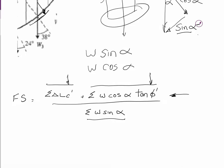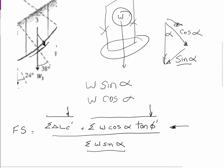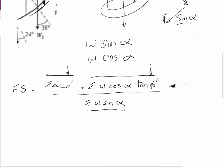Delta L you're given, C is a constant. W cos alpha, there's a different one to each slice. Tan phi, phi is a constant. Divided by the sum of W sin alpha, there's a different one for each slice. And the easiest way to do it is in a table, and I'll show you that next.